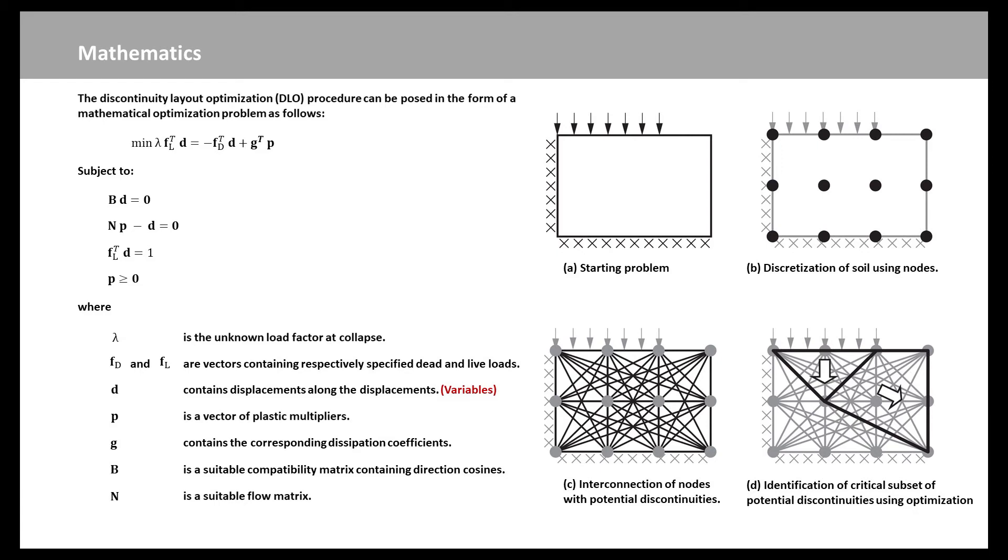So, for 12 nodes, we have 12 times 11 over 2, 66 possible slip lines. Using optimization, we pull out the 6 critical slip lines that form the collapse mechanism. The more nodes we use, the better the solution. Typically we will be running with 500, 1000, 2000, or more nodes. Millions of potential slip lines to be modeled.